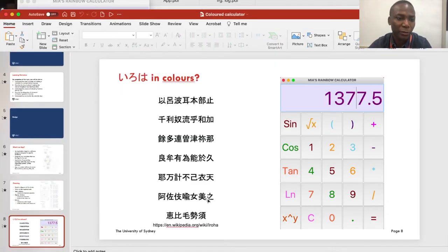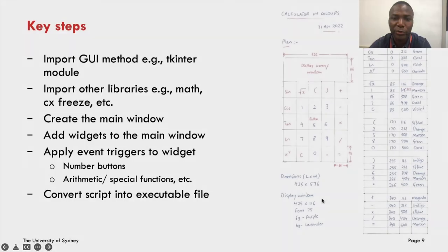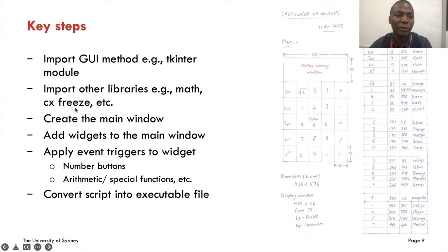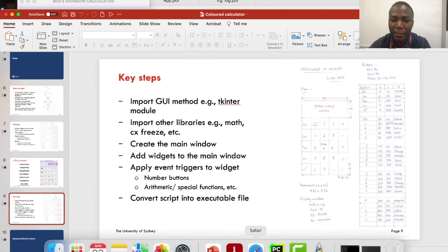Let's go into some of the key steps we're going to run through. We need to think about the tools: we're using Python, so we need the tkinter module and libraries such as math. For file conversion, we'll use cxfreeze — we'll talk about that at the end. We have the mainframe, the display screen, and then the buttons or widgets. Lastly, we'll convert the program into an executable file. I'll go into my Python library and start the process.